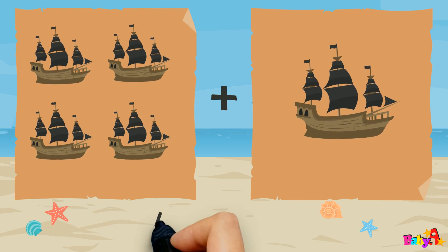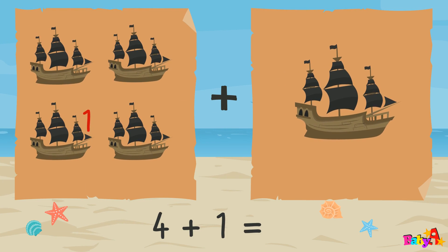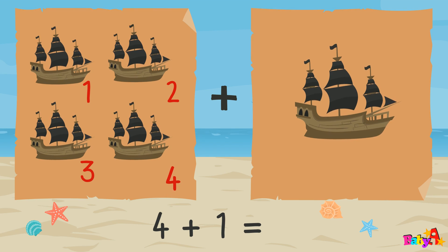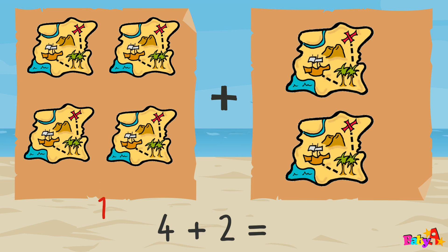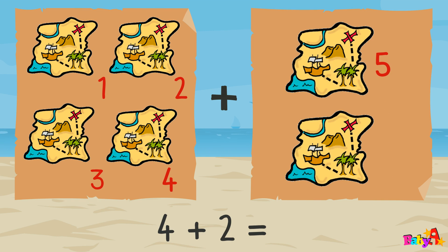4 plus 1 equal 1, 2, 3, 4, 5 — 5. 4 plus 2 equal 1, 2, 3, 4, 5, 6 — 6.